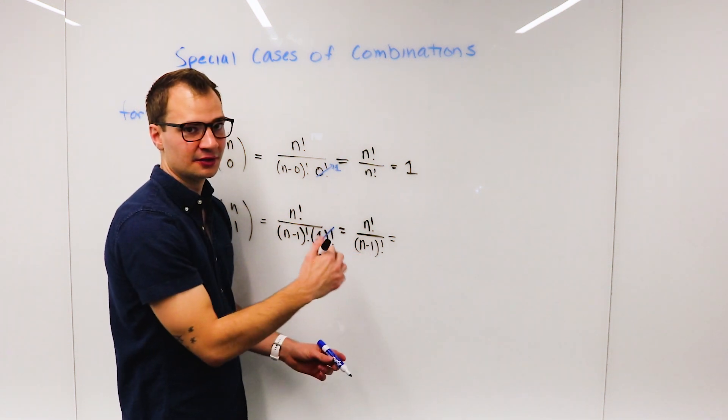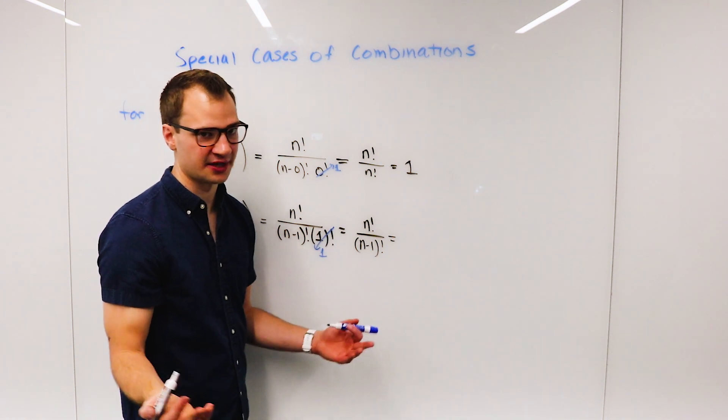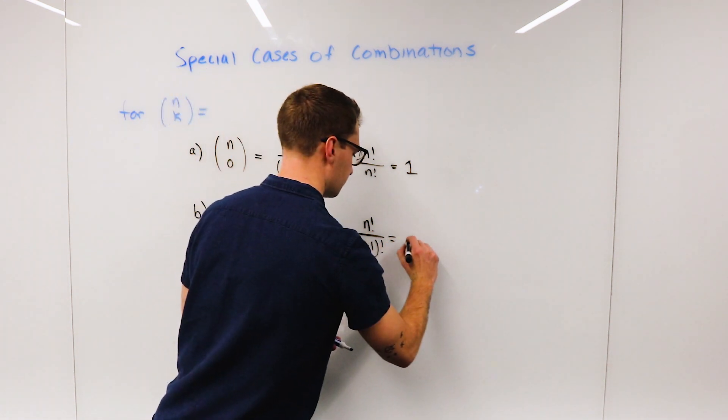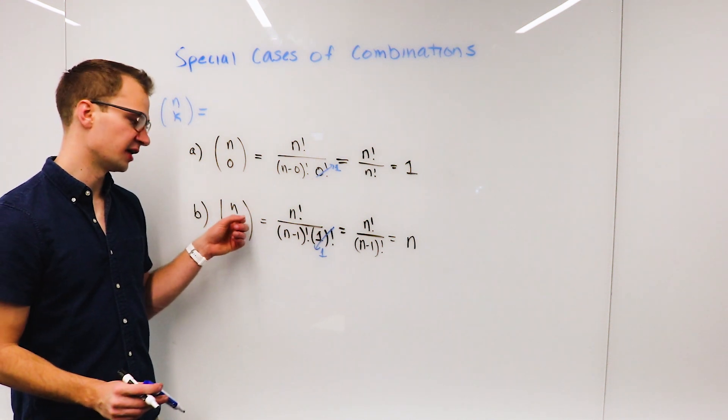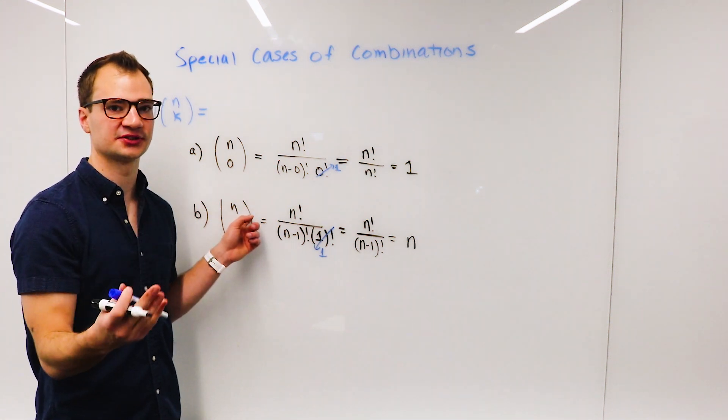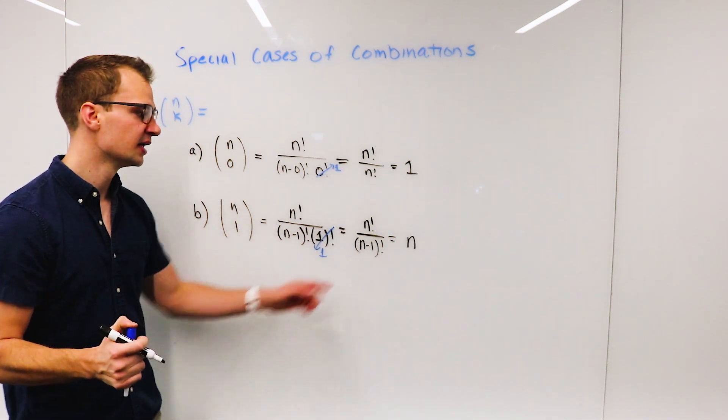So for picking one candidate to get on a committee out of 10, such as a primary election or something, any one of those 10 could get on.